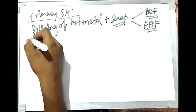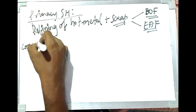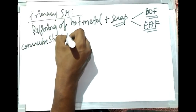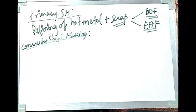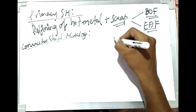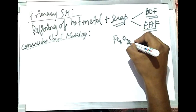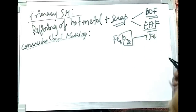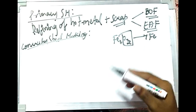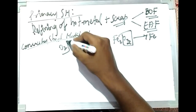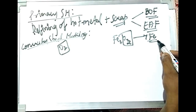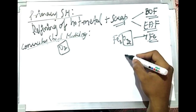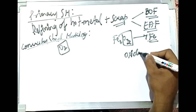In iron making, reduction takes place — Fe2O3 is converted to Fe by removing oxygen. But in steel making, we are sending oxygen into the hot metal so that impurities are removed. Therefore, the steel making process is an oxidation process — this is an important concept to remember.